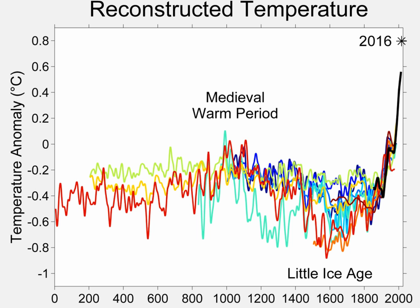Ice cores are cylindrical samples from within ice sheets in the Greenland, Antarctic, and North American regions. First attempts of extraction occurred in 1956 as part of the International Geophysical Year. The U.S. Army's Cold Regions Research and Engineering Laboratory used an 80-foot long modified electrodrill in 1968 at Camp Century, Greenland, and Bird Station, Antarctica. Their machinery could drill through 15 to 20 feet of ice in 40 to 50 minutes.